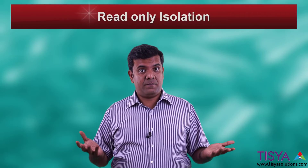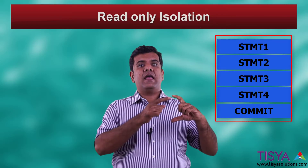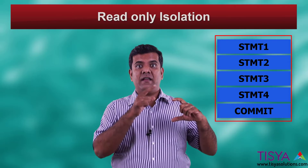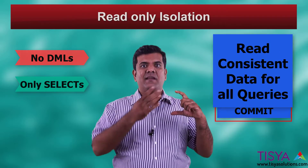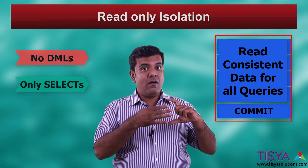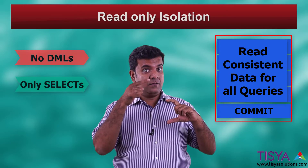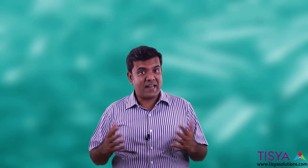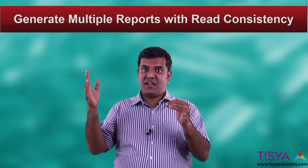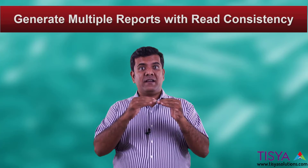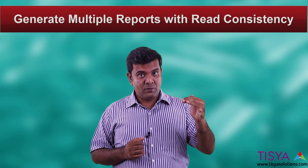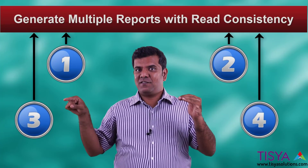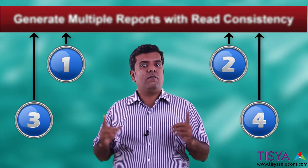The third behavior is read-only isolation. In a transaction, if you set the isolation level to read-only, the transaction cannot do any DML — all statements are read-only and will get the data as of the time the transaction started. This is useful when you want to run a financial closure: the balance sheet, profit and loss, and trial balance should all have the same data. You start a transaction with read-only isolation, run all the queries, and get a read-consistent report.